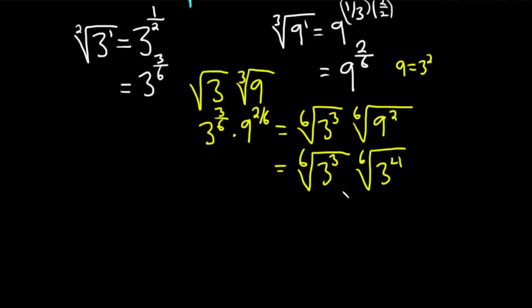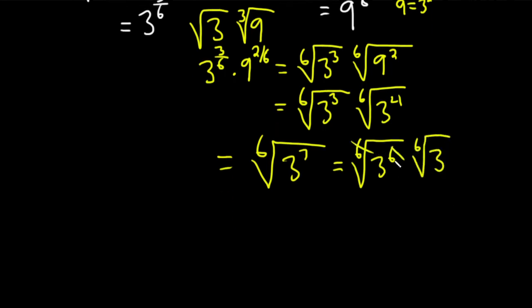Now we can multiply through these roots. This is the sixth root of, you add the exponents, so it'll be three to the seventh, but you can write that as three to the sixth times three. And that way these cancel. So we end up with three times the sixth root of three.